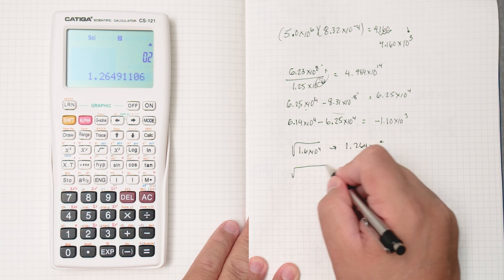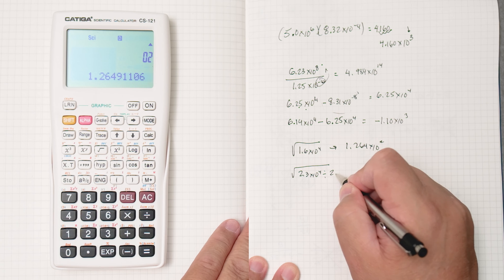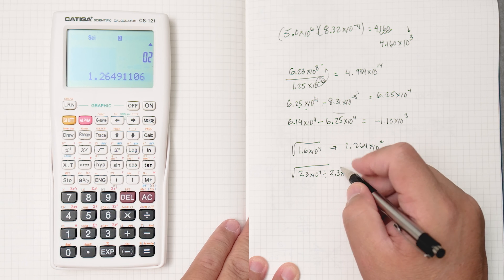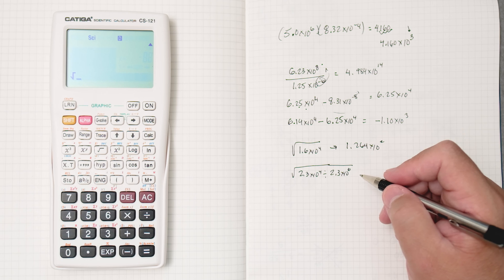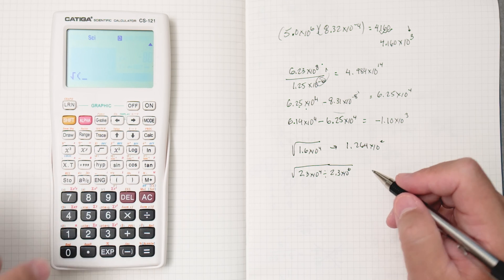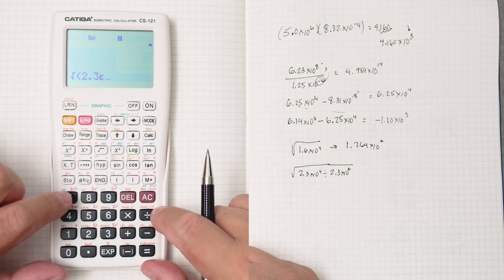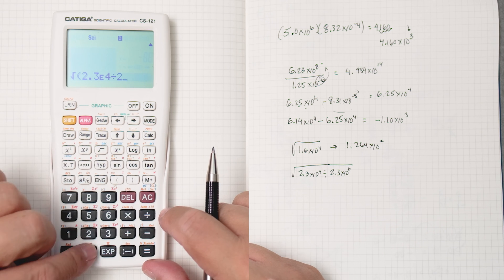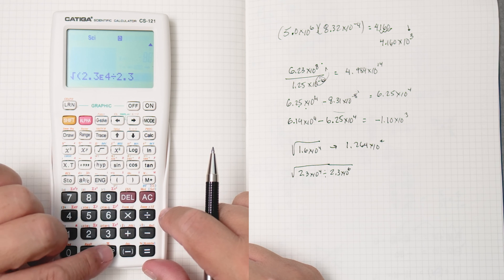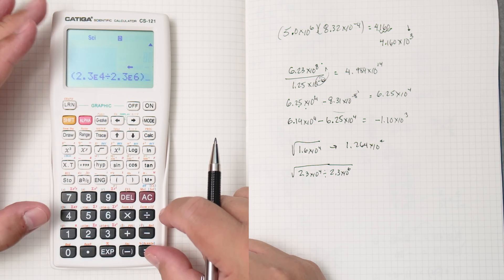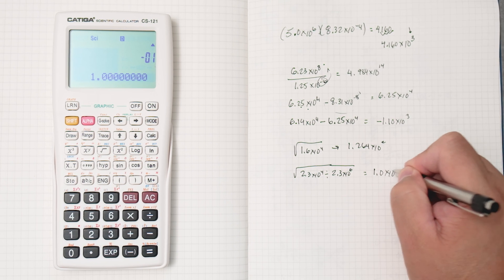If we have something in the square root like 2.3 times 10 to the 4th divided by 2.3 times 10 to the, let's say 6. We can do that. Square root. I would put parentheses just in case to tell the calculator, hey, this is 1 calculation, 2.3 to the power of 4, divided by 2.3, to the power of 6. Close parentheses, equals, and you can see here it's going to be 1.0 times 10 to the minus 1.